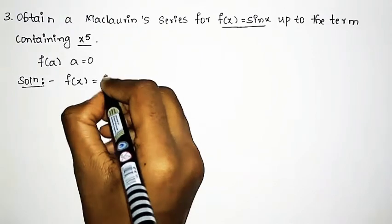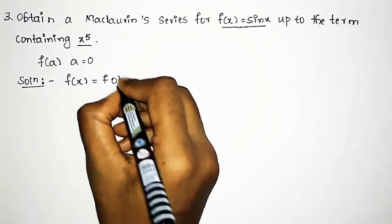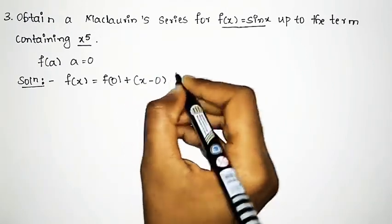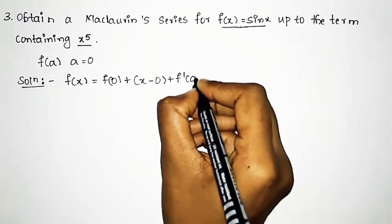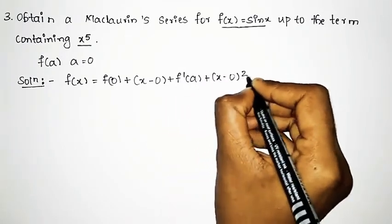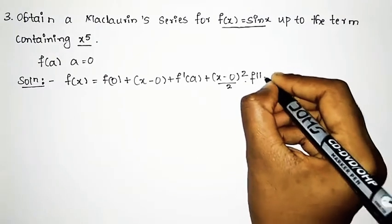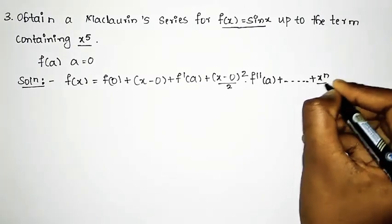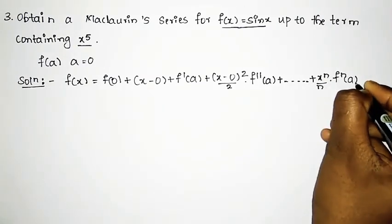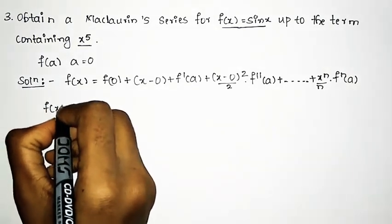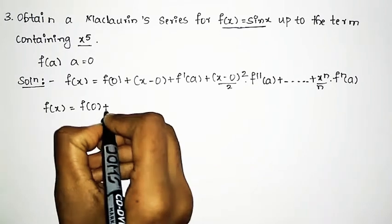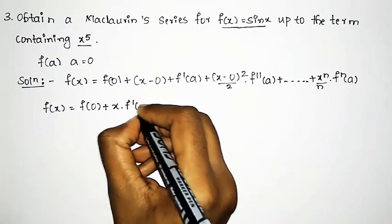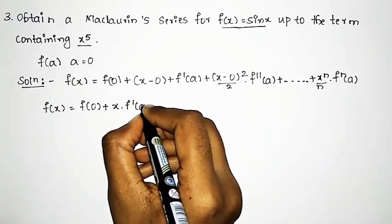Therefore the Maclaurin series equation is: f(x) = f(0) + (x minus 0) · f'(a) + (x minus 0)² / 2 · f''(a) + ... up to the nth term, which is x^n / n · f^(n)(a). So f(x) = f(0) + x · f'(0)